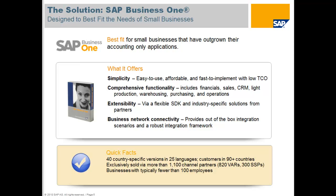You have access to comprehensive functionality: financials, production, inventory management, sales orders, production orders, and customer relationship management throughout the entire system, as well as deep rich reporting functionality and mobile access to your data. The software is extensible via a very flexible SDK, and we have a number of industry solutions available from our software solution partners who have built additional complementary solutions extending SAP Business One into process manufacturing or advanced warehousing capabilities with RFID scanning ability.